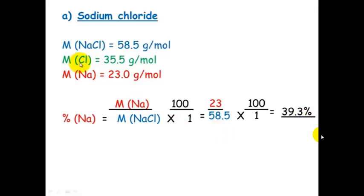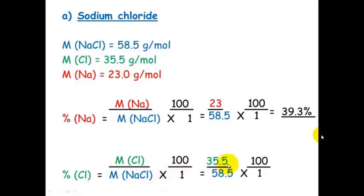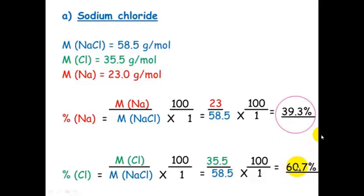To work out the chlorine, we do the same thing. The percentage of chlorine is the molar mass of chlorine divided by the molar mass of sodium chloride, times 100 — which is 35.5 divided by 58.5, times 100 — and it equals 60.7%. Remember to double-check that your answer is correct by making sure these answers add up to 100%.